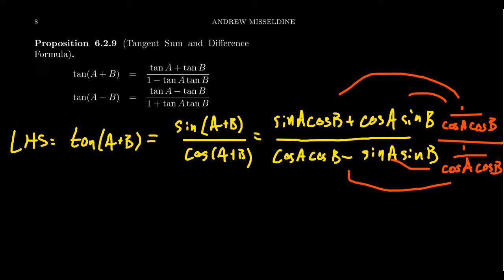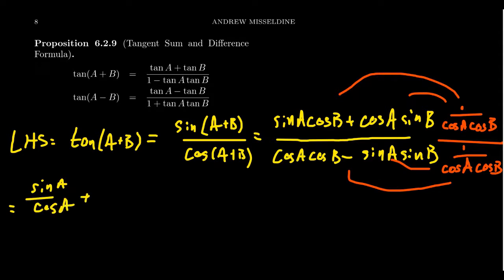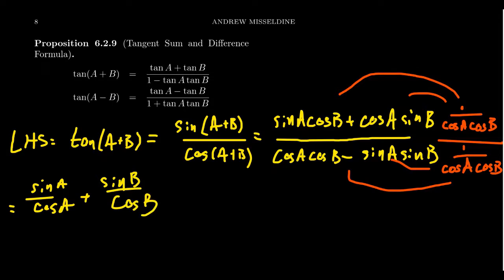So in red here, it's just a strategic number one. Look at the first product: sine of a times cosine of b. When you distribute that fraction, the cosine of b's cancel out and you're left with sine of a over cosine of a. On the next group, the cosines of a cancel out, leaving sine of b over cosine of b. That is then the numerator.